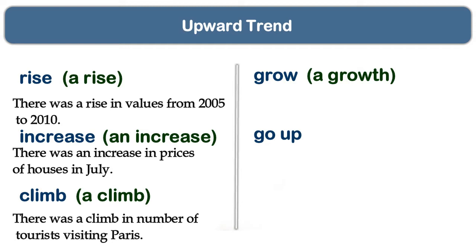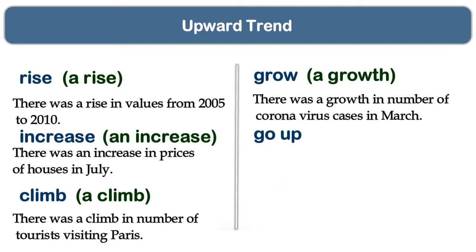There was an increase in prices of houses in July. There was a climb in the number of tourists visiting Paris. There was a growth in the number of coronavirus cases in March. So when describing an increase in a graph, you can use different verbs and different nouns, making your sentences varied.